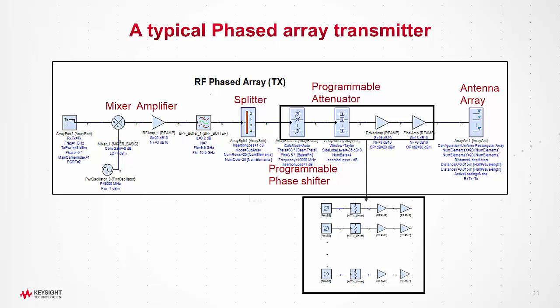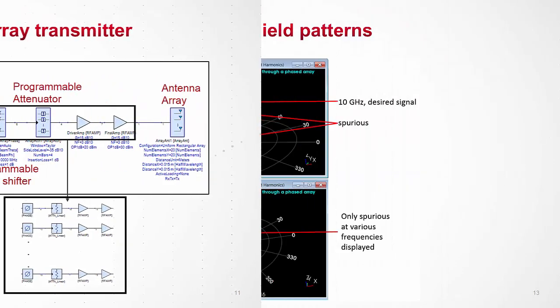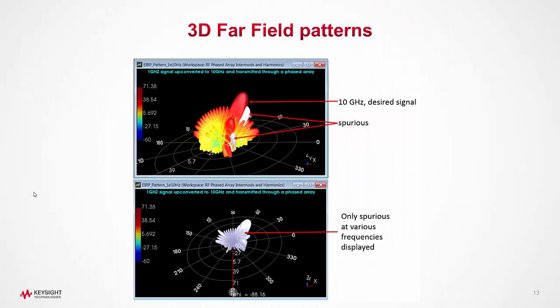Once simulated, we can plot three different intuitive graphs. Graph number one, EIRP plot in the far field.